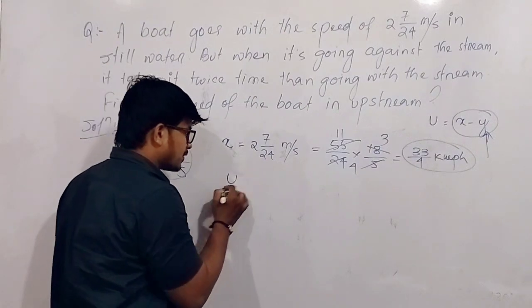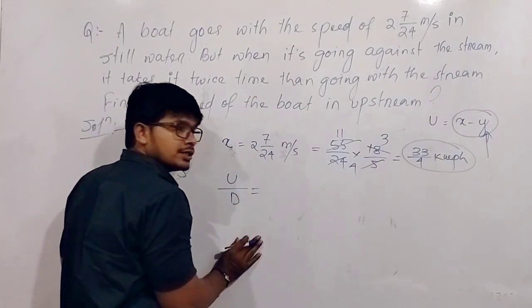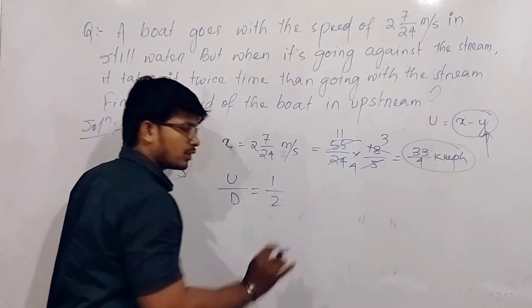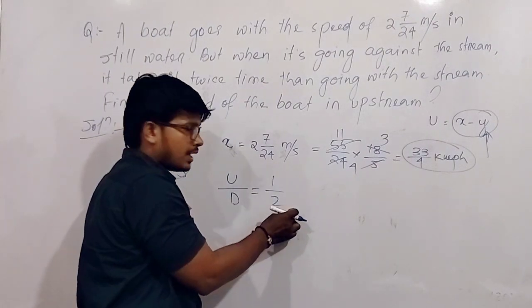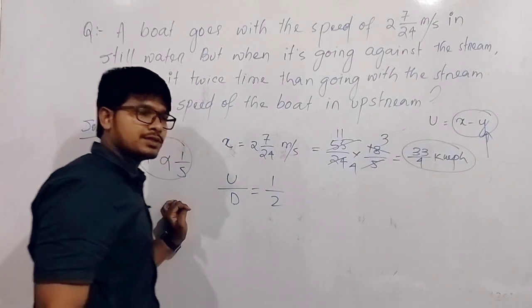So upstream and downstream time relation is 2 is to 1. Then speed relation will be 1 is to 2. That means upstream speed to downstream speed is 1 is to 2. Got it?